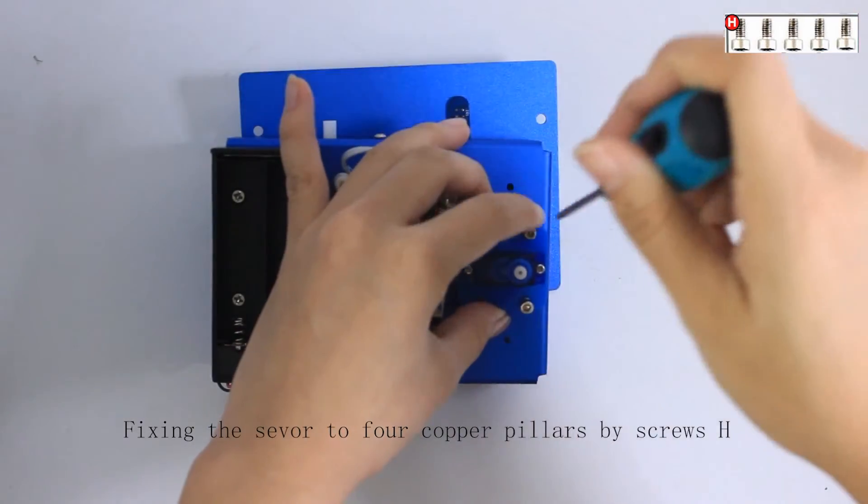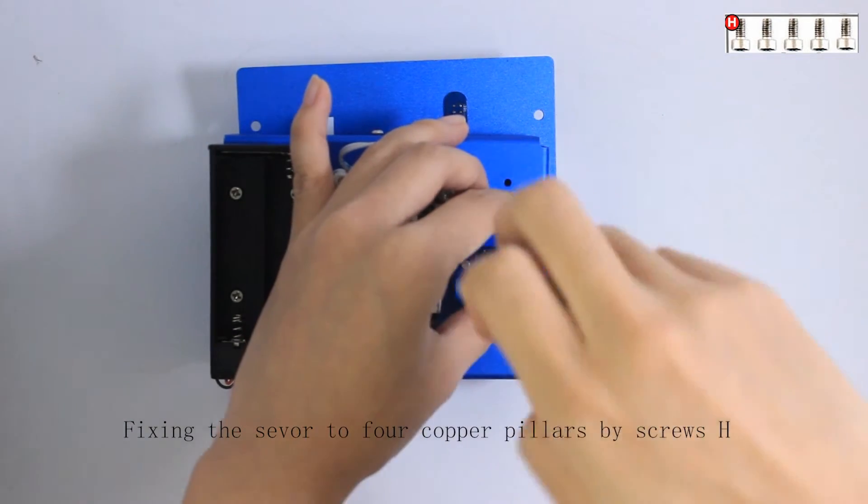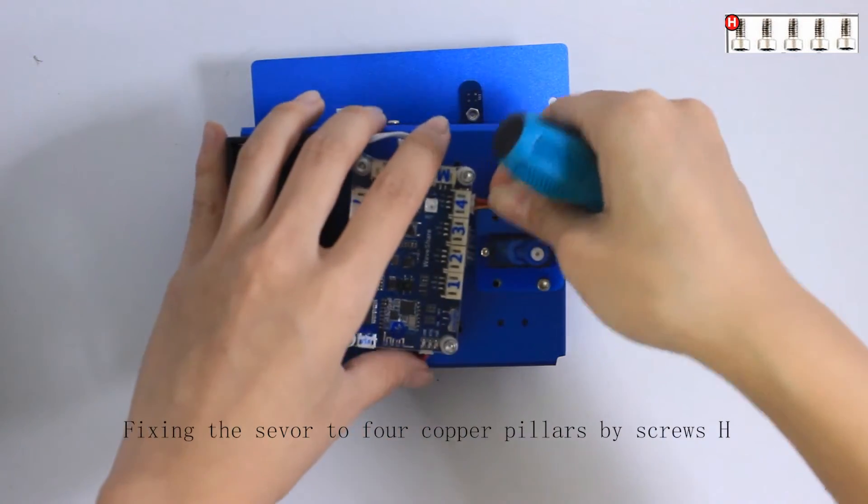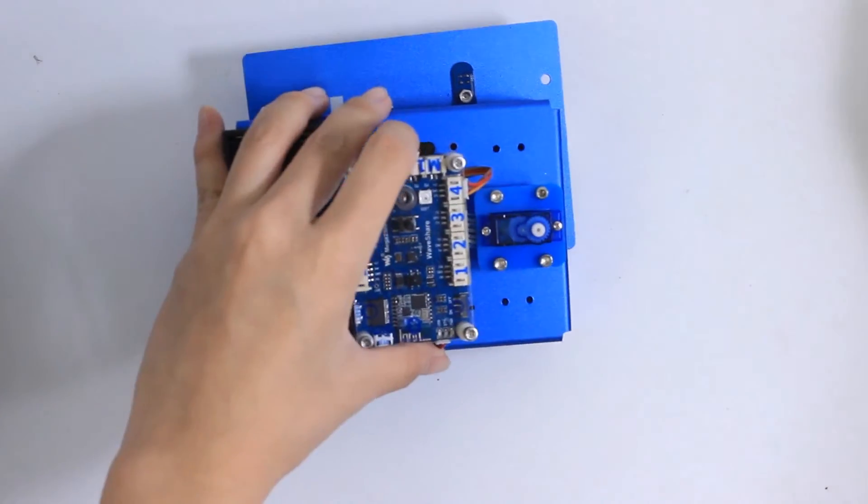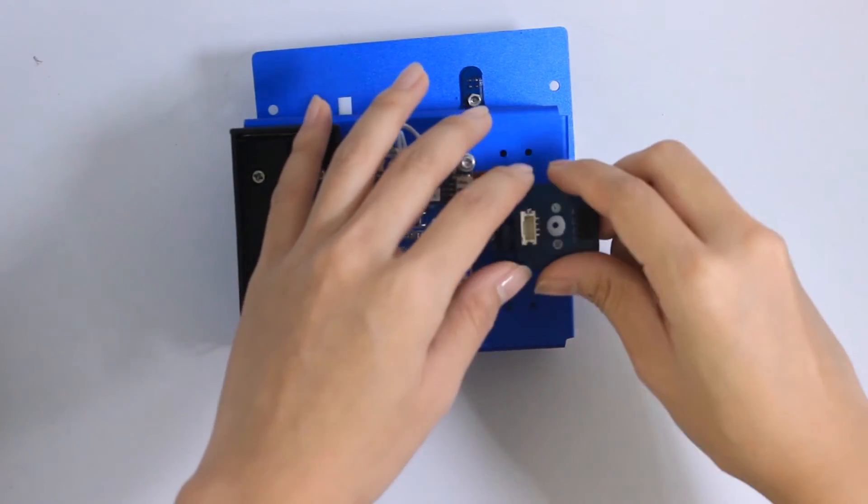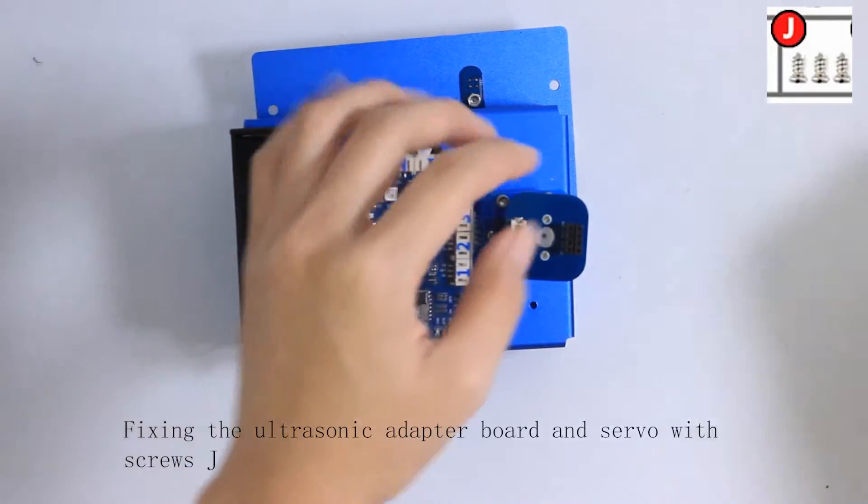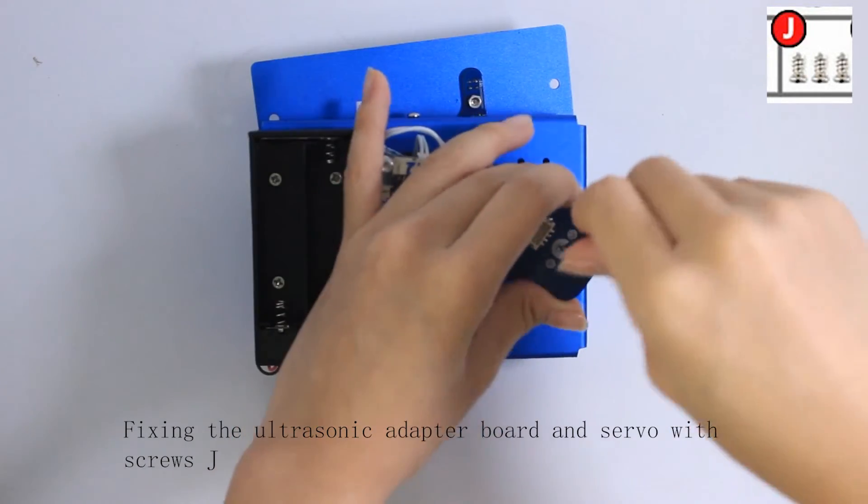Fixing the servo to four copper pillars by screws H. And fix the ultrasonic adapter in servo with screws J.